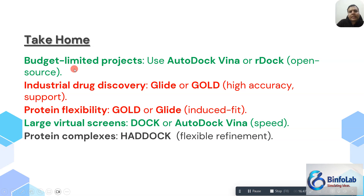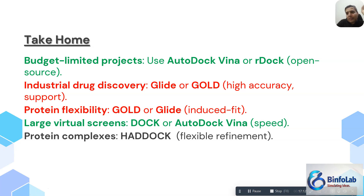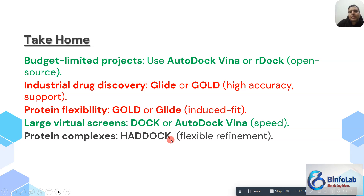The take-home messages: if you are working on a budget-limited project, use AutoDock Vina or rDock. If you are in industry or have the budget, go for Glide and GOLD. If you need protein flexibility and have the money, go for Glide and GOLD — but remember they are on the slower side, so keep in mind the size of your compound library. If you are screening a large dataset, use DOCK or AutoDock Vina for better speed. For protein-protein complexes, HADDOCK is the best, but also consider AlphaFold3 or Chai-1.